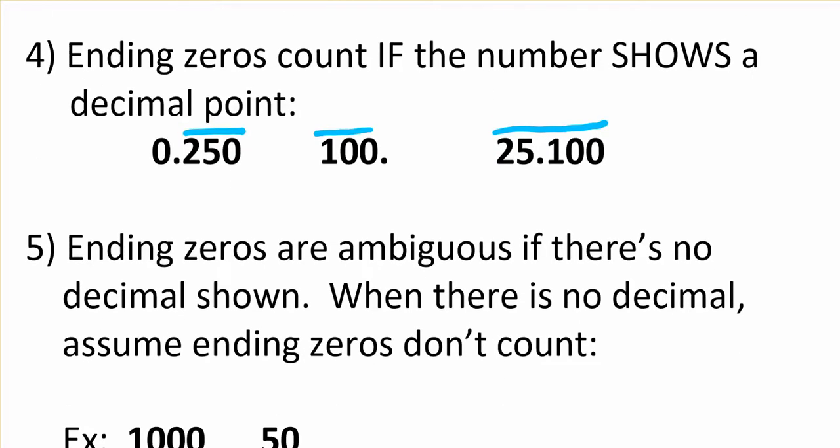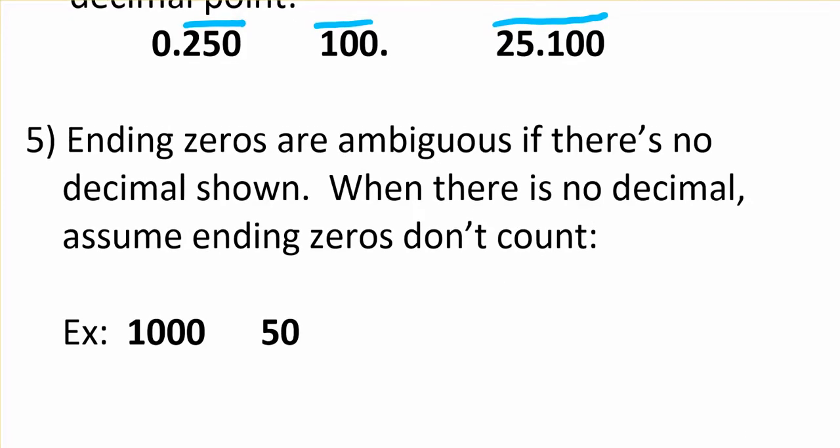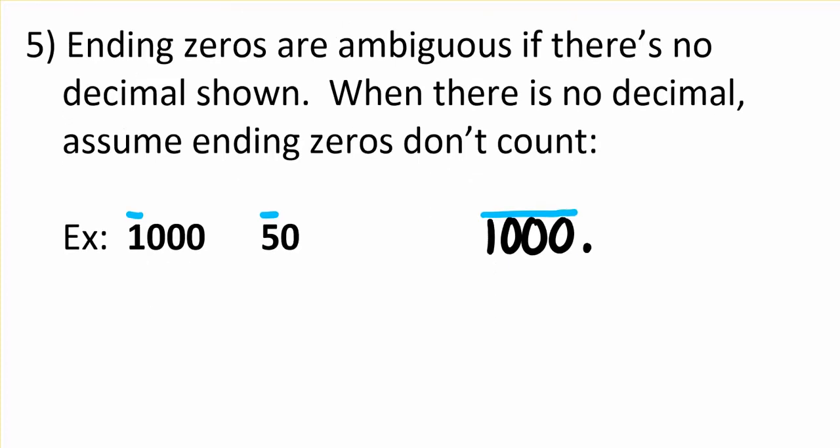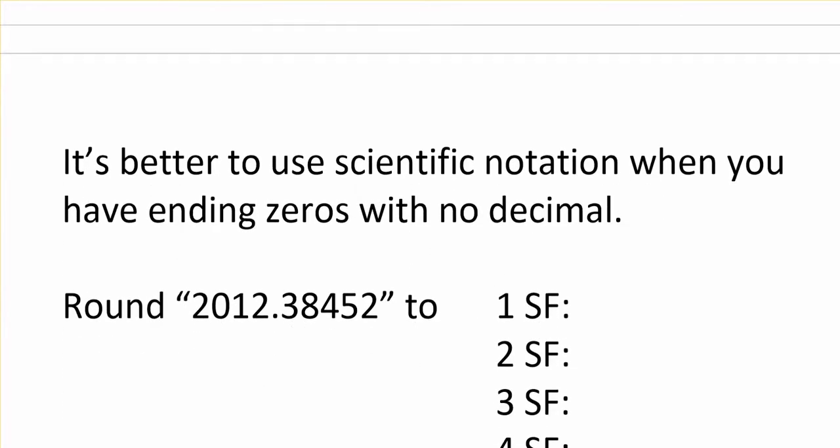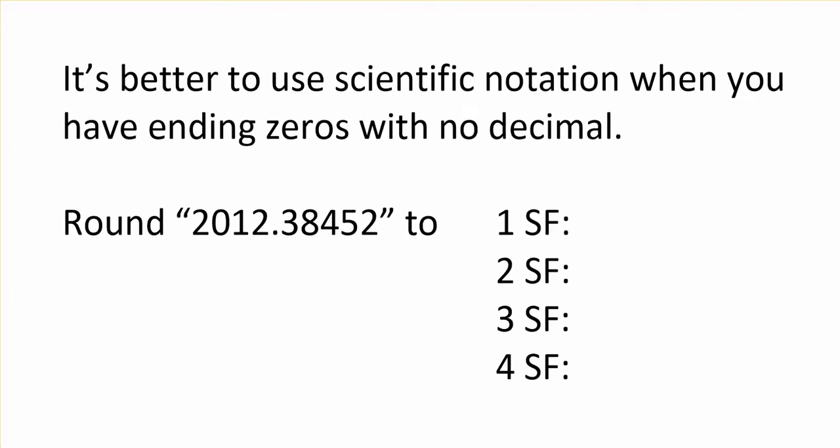If there is an ending zero or ending zeros and there's no decimal point shown, technically that's ambiguous. But what we assume is that they don't count. So on each of these I would have just one significant figure. And that's very different than if there were a dot shown. Now they are all significant.